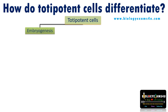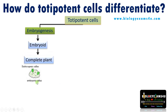This totipotent cell can give rise to embryo-like structures, which are called embryoids in plant tissue culture. So embryogenesis can happen, forming embryo-like structures called embryoids, and these can give rise to a complete plant.